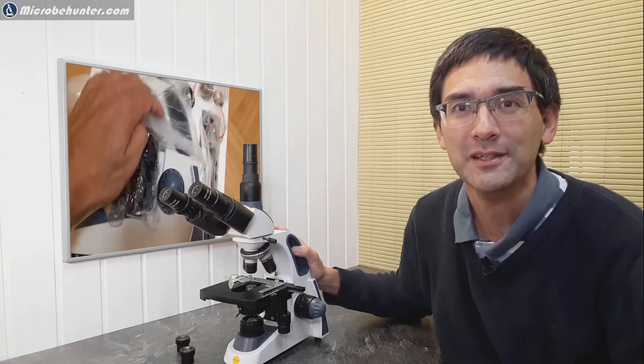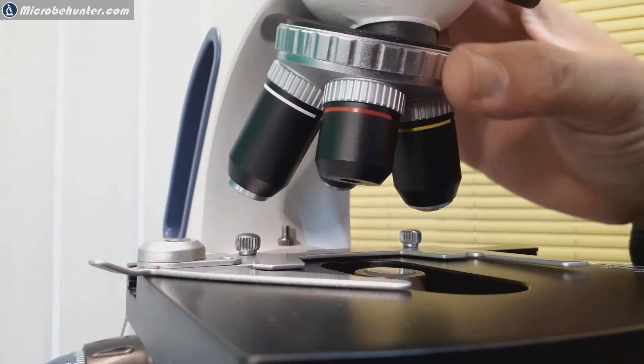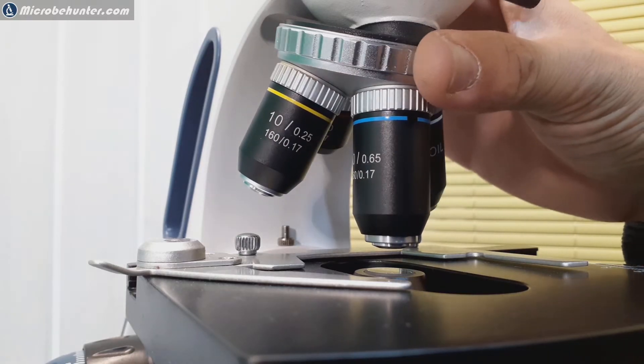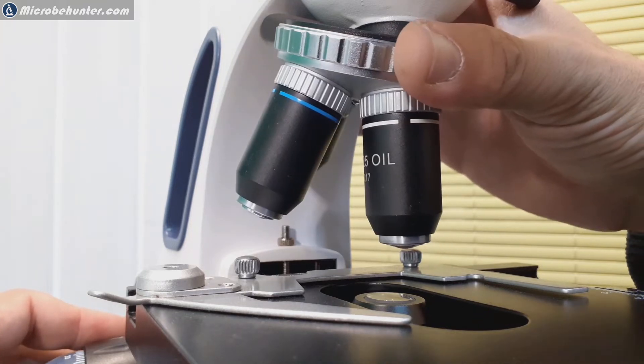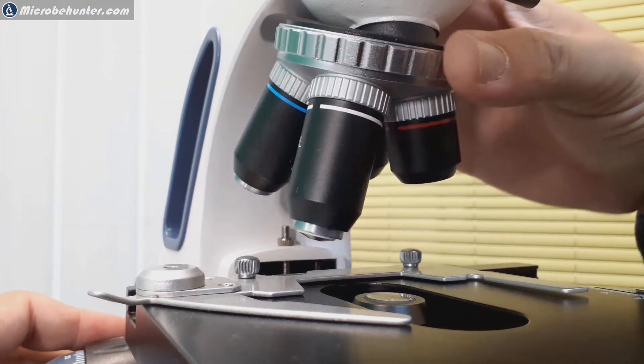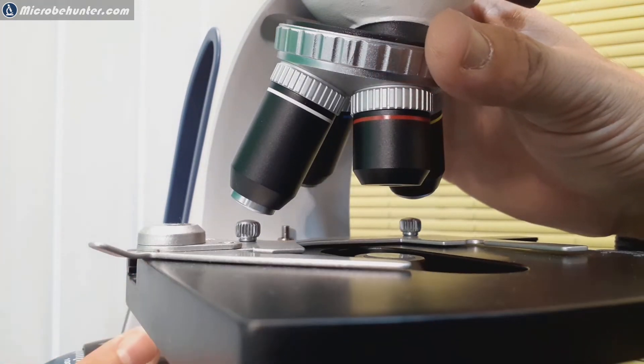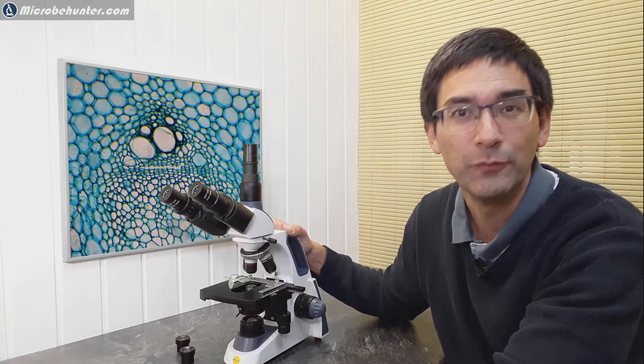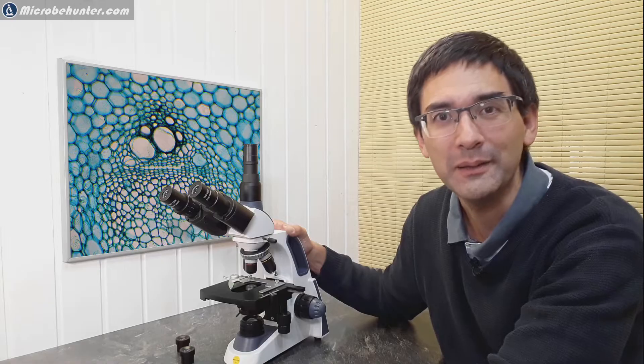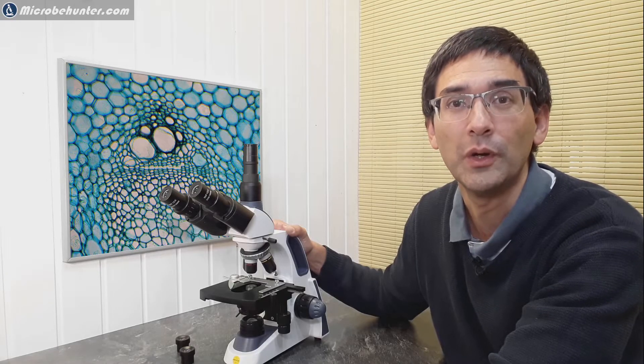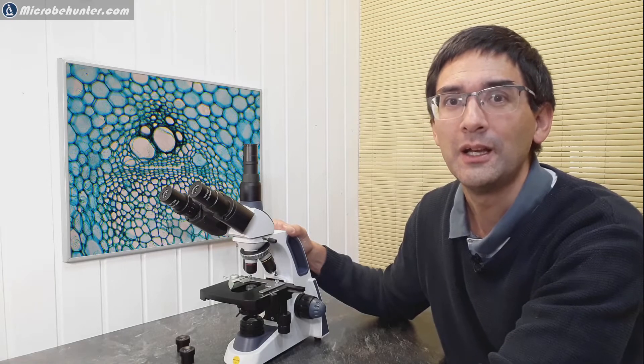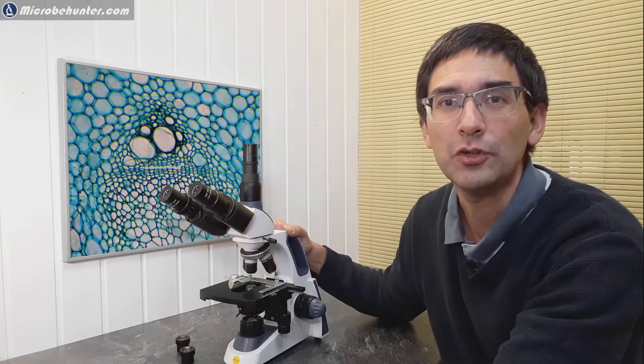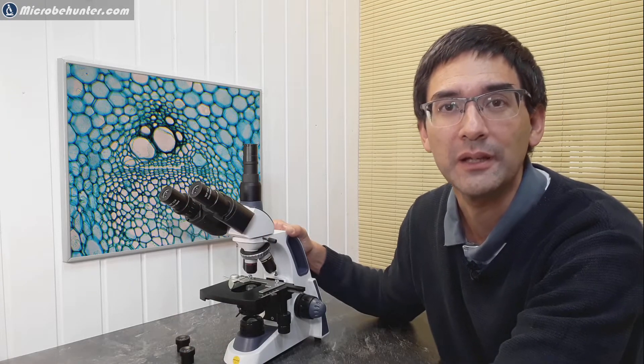What I'd like to do now is show you a close-up of the different parts. We're going to start with the revolving nose piece where the objectives are connected. It comes with four objectives: the standard objectives are 4x magnification, 10x, 40x, and also 100x oil immersion, so with those 10x eyepieces you can get magnification up to 1000x.